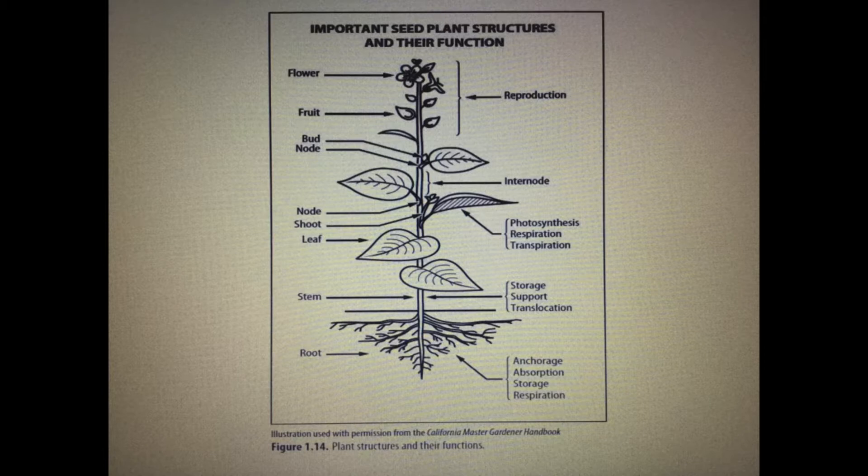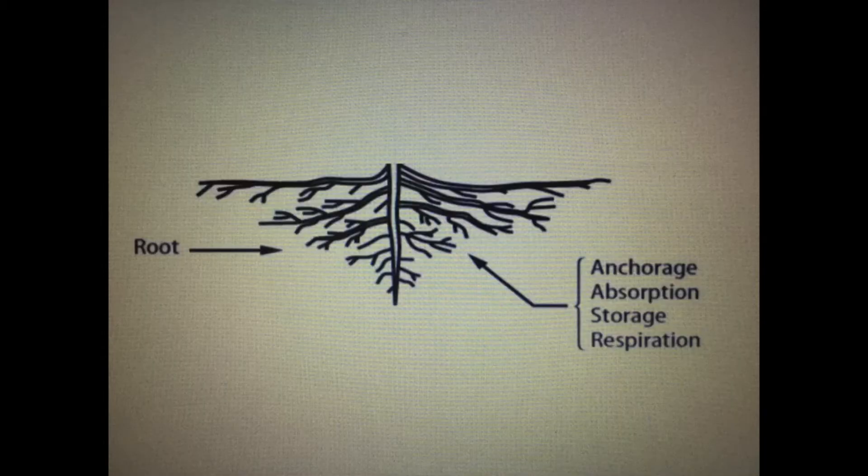All plants have roots, stems, leaves, flowers, fruit, and seed.